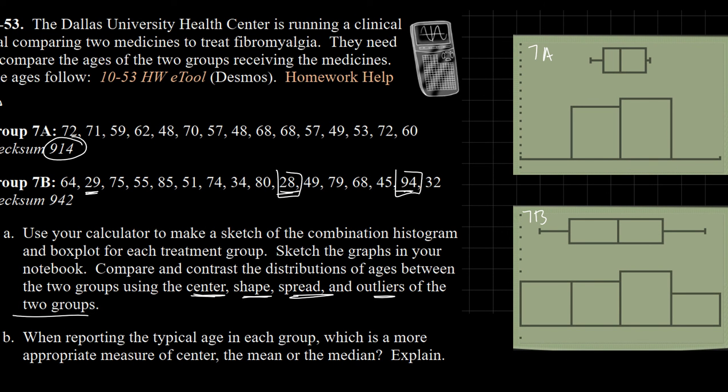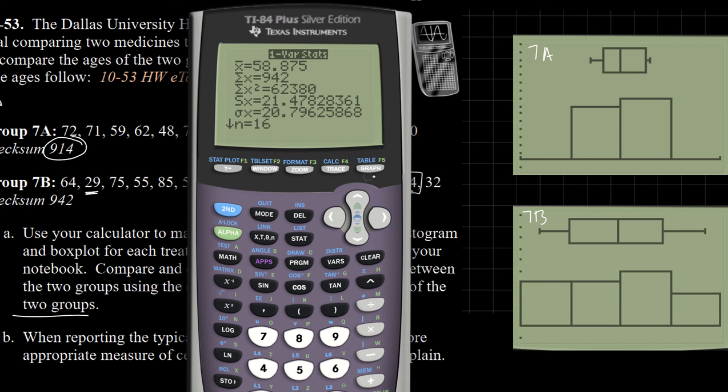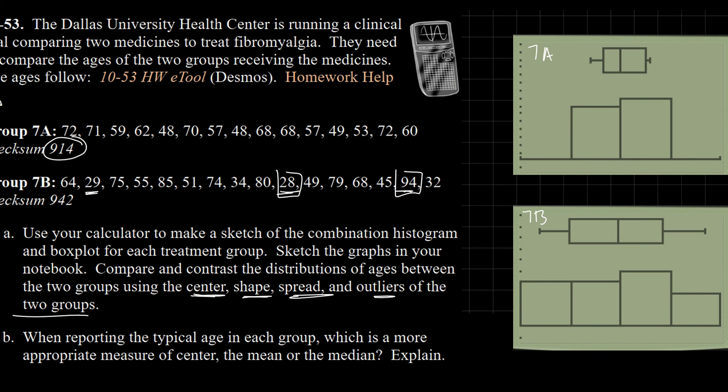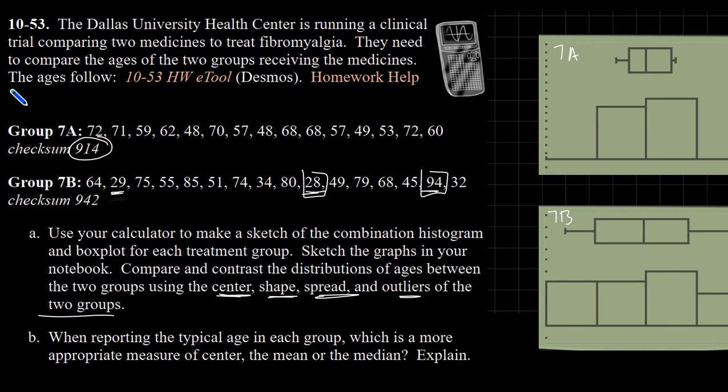It asks: when reporting the typical age in each group, which is a more appropriate measure of center, the mean or the median? This is tough. If I had outliers on just one side, like if I had a 94 year old only, I would say definitely I would be using the median because of the presence of that outlier. But the distributions are not skewed and I think you could go either way. On group 7B the mean was 58 and the median was 59.5, so they're pretty close to each other. I'd say in this case it's probably okay to use either and I'm just going to leave it at that.